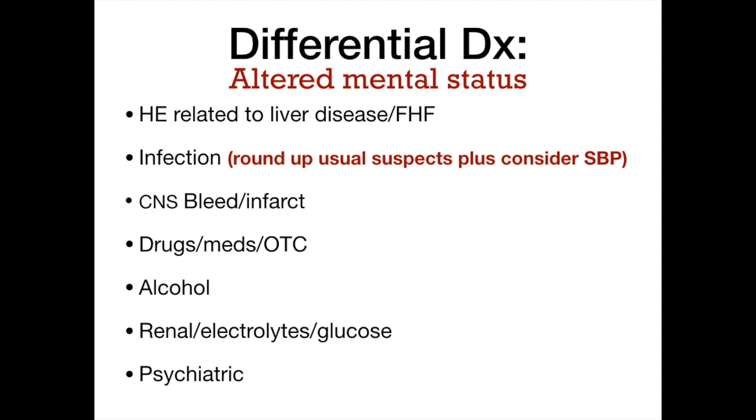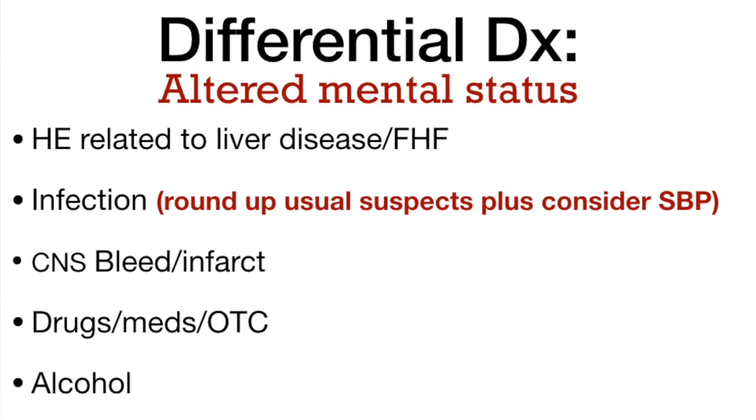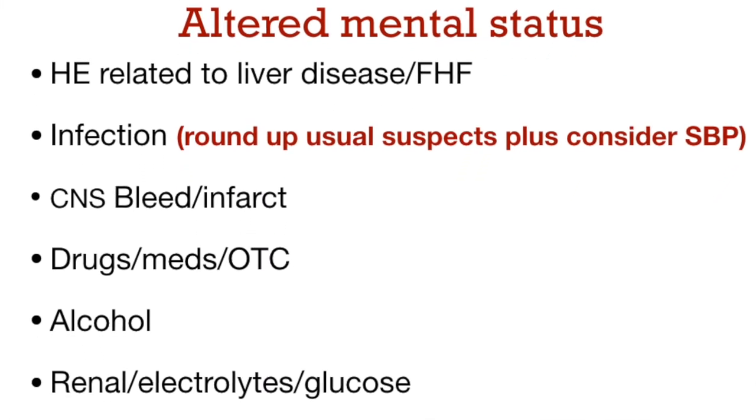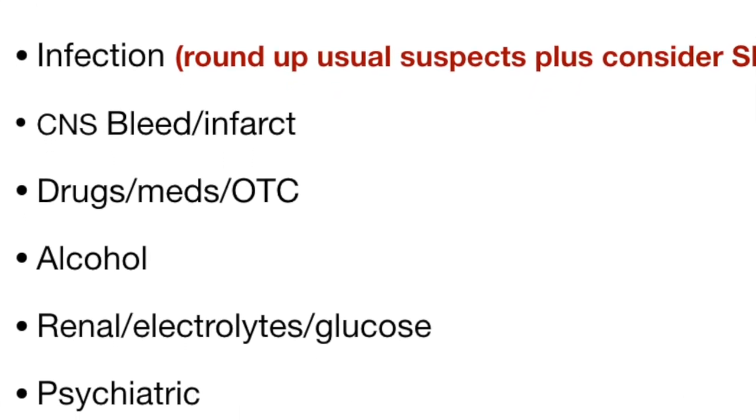With hepatic encephalopathy, patients labeled with HE sometimes have the differential stop right there. But you have to think outside the box. Of course it could be liver-related, but you have to always think about infection, CNS bleed or infarction, alcohol, drugs — legal, illegal, or over-the-counter — that can affect mental status, renal and electrolyte problems, and psychiatric or emotional decompensation as the cause of altered mental status. Keep the differential wide open, even in patients waiting for a liver transplant with a MELD score of 25.